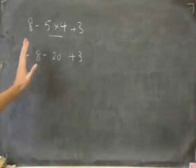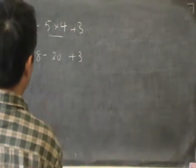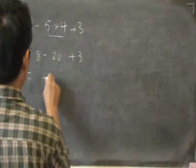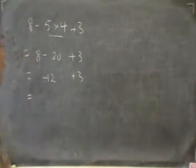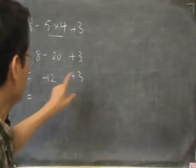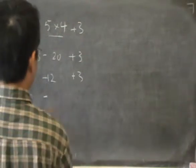So we must start from the left and do the 8 minus 20. That is minus 12 plus 3. And then finally we do the minus 12 plus 3, so that would be minus 9.